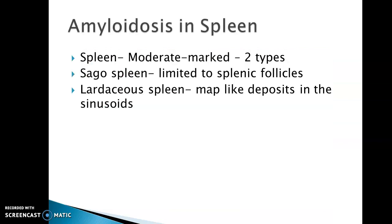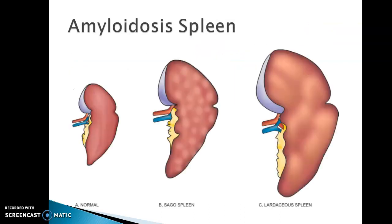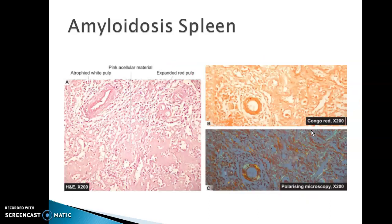When there is amyloidosis in the spleen, it is of two types: the sago spleen and the lardaceous spleen. In sago spleen, the amyloid is limited to the splenic follicles. In lardaceous spleen, there are map-like deposits in the sinusoids. The sago spleen can be asked as a short answer in exams. The spleen with amyloid deposits shows apple green birefringence on Congo red stained tissue.